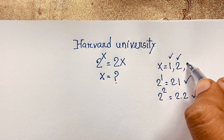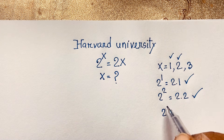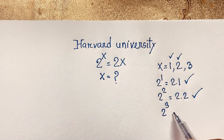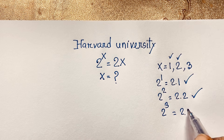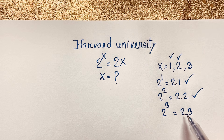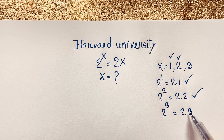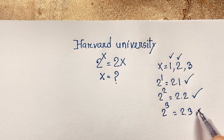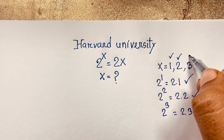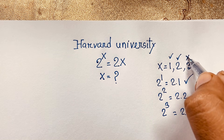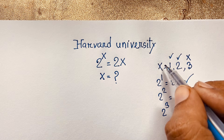Now if you think x is equal to 3, then 2 to the power 3 is equal to 2 times 3. This is 8 and this is 6. Left hand side and right hand side are not equal, so x equals 3 is not the right answer.